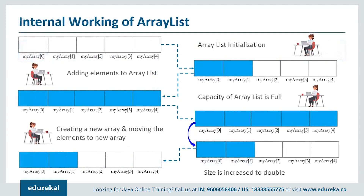Now let's look at the internal working of ArrayList. First, we create an empty array and then go on adding elements. Once the array is full — that is, the number of current elements exceeds the maximum size — we need to increase the size. Since array size cannot be increased dynamically, a new array is created internally and the old array is copied to it, effectively doubling the size. That's how it works internally.